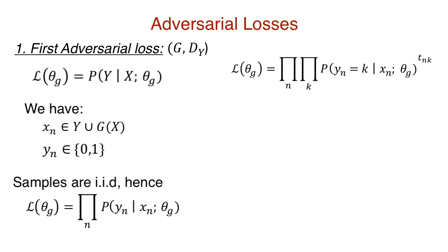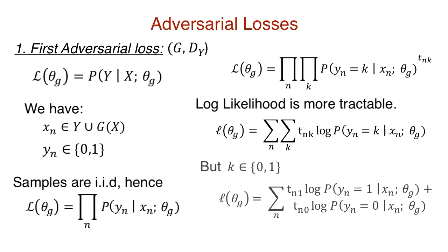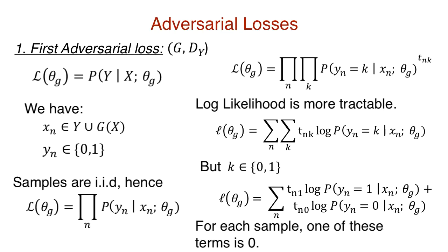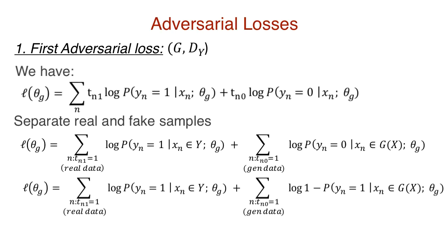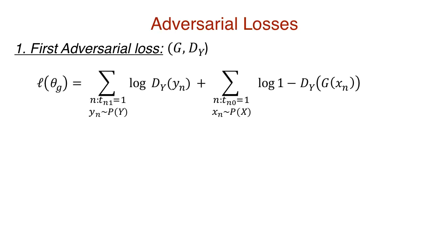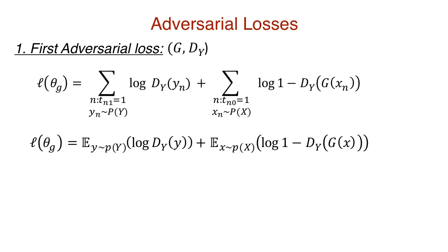T-N is a one-hot encoded vector that corresponds to the true label of input X-N. Now consider the log-likelihood, denoted by the little l, and expand the inner sigma over K. Remember, this is a binary classification where K can take two values: 0 for generated data and 1 for real data. For any sample X-N, only one of these terms is non-zero because T-N is one-hot encoded. Hence, we can separate real data samples in Y from generated data samples in G. Making a substitution for the discriminator notation, we get the following form. We can approximate the value taking the expectation over both terms. This is the likelihood that discriminator D-Y seeks to maximize and generator G of X seeks to minimize.